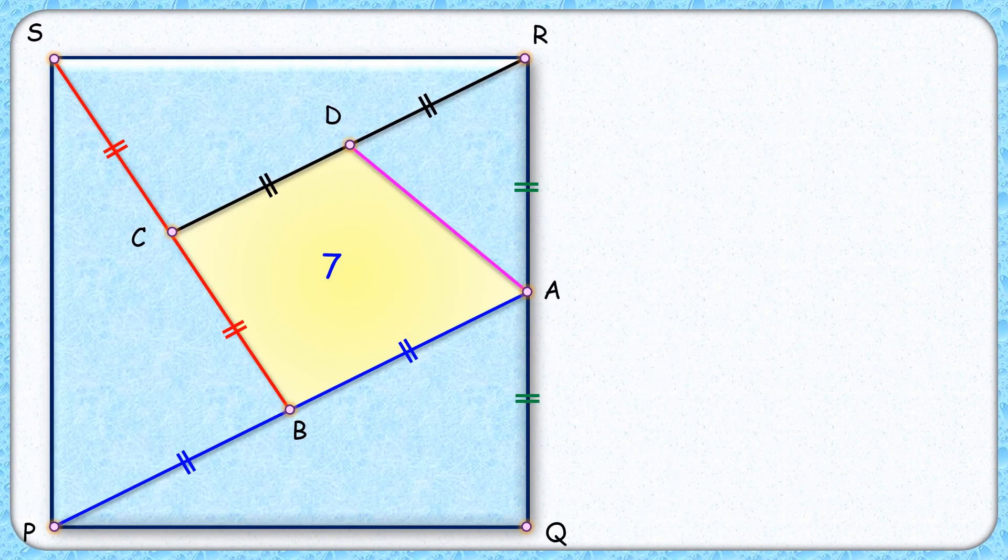Let's check the solution. For our approach, we will first find what fractional part these green areas are with respect to the square. Then we will find what fractional part this yellow region forms. Then we will compare it with 7 to get the area of the full square.